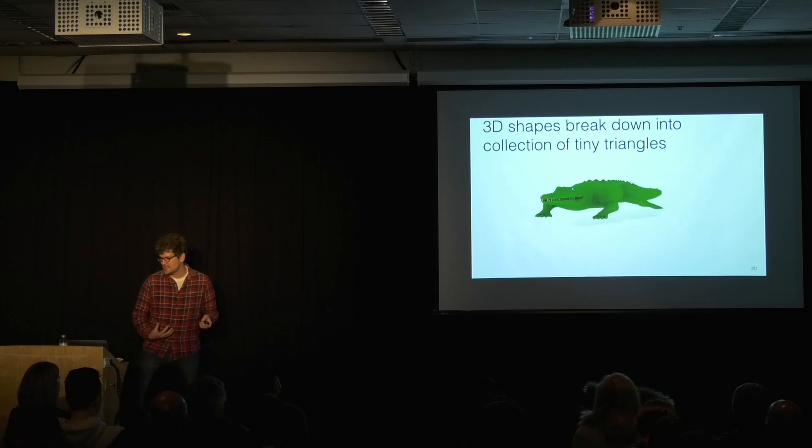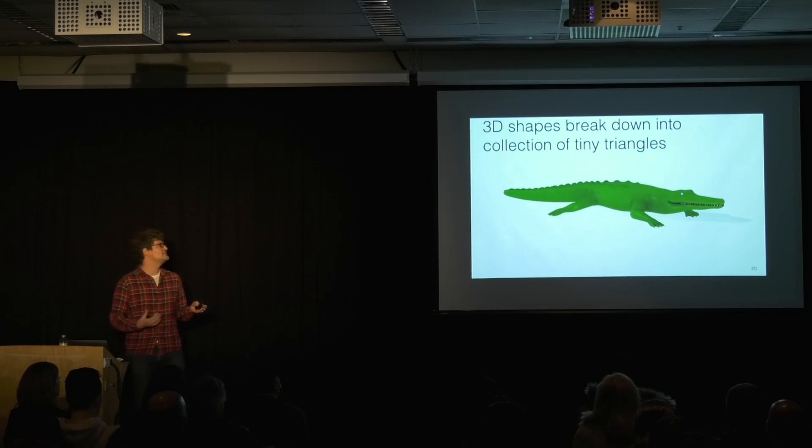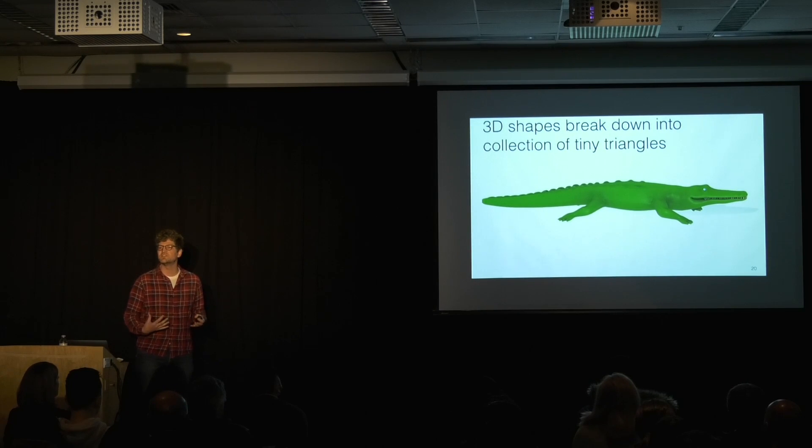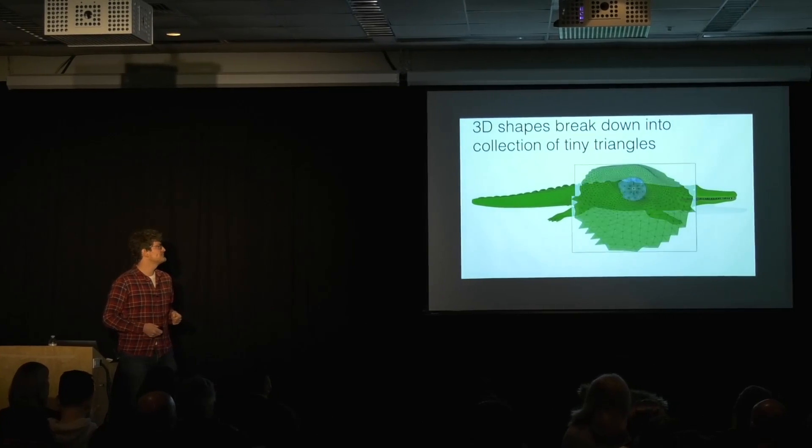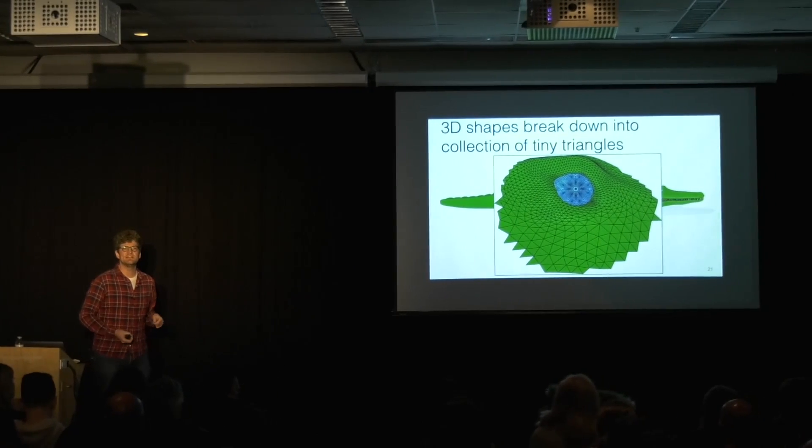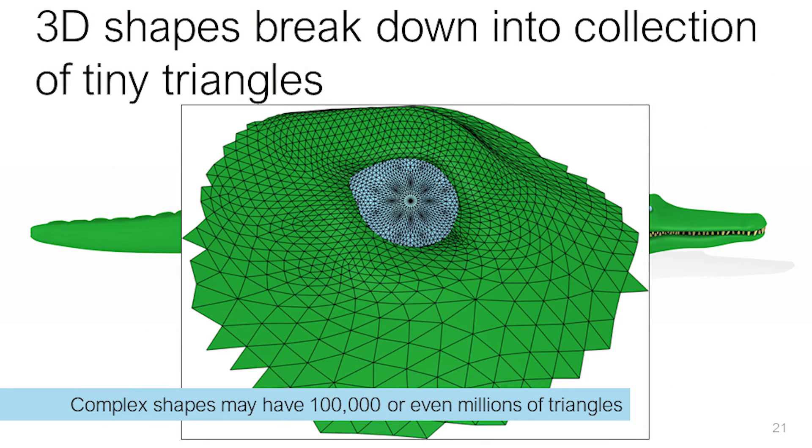We've looked at 2D characters. Let's take a look at something harder. Let's go to three dimensions. Most of the shapes around us are really 3D. So we should understand three dimensional surfaces. So a 3D alligator like this, if we zoom in on it,